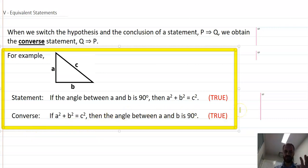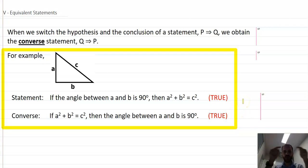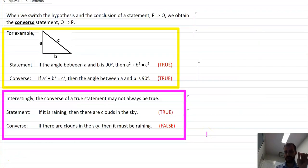Now this is an interesting one because it works in both directions. If P implies Q, Q also implies P. But that is not always the case. Here's an example where the converse is not true. If it is raining, then there are clouds in the sky. Raining P, Q clouds in the sky.